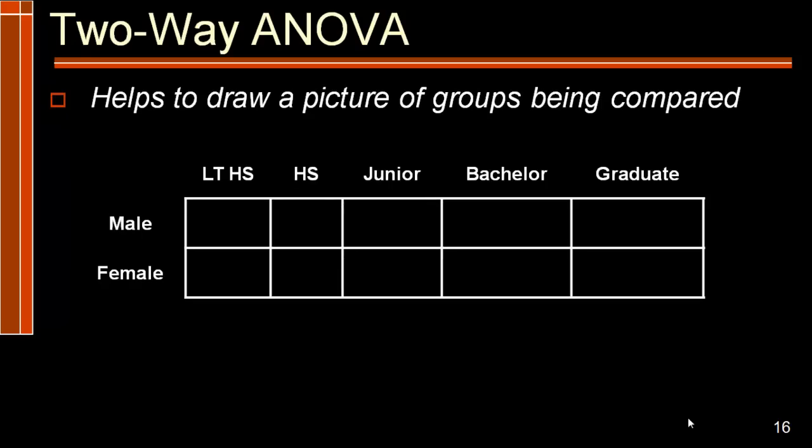So this is what my design looks like. I have the two genders and the five types of degrees. So this is a two by five or a five by two factorial ANOVA design. Let's look at SPSS for how we can conduct this analysis.